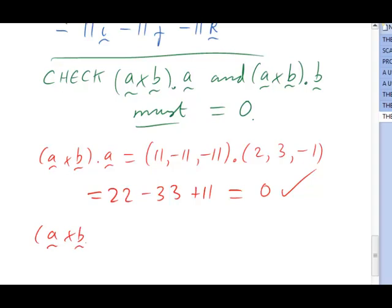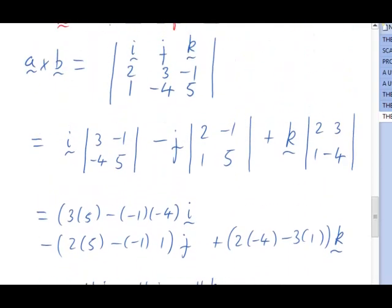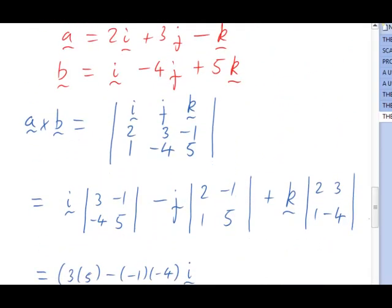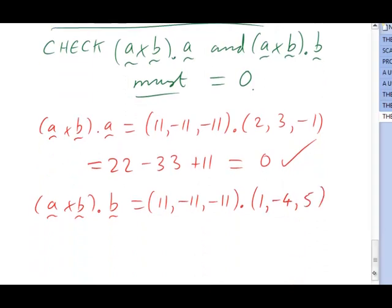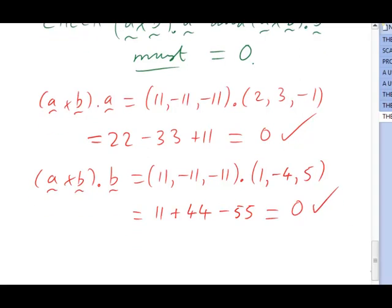OK, that's promising. Now let's check the other one. a cross b dotted with b is 11, negative 11, negative 11 dotted with... I'll quickly go back and check what b was. It was 1, negative 4, 5. And doing the dot product gives us 1 times 11, minus 4 times minus 11, so it's plus 44. And then minus 11 times 5 is 55. And sure enough, that again comes to 0. So our a cross b is indeed perpendicular to both a and b. And I think that should be convincing that we've almost certainly got the right way of evaluating a cross b.